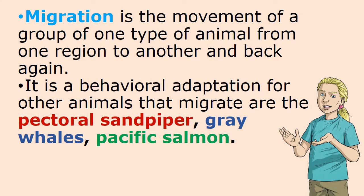Migration is the movement of a group of one type of animal from one region to another and back again. It is a behavioral adaptation. Other animals that migrate are the pectoral sandpiper, the gray whale, and the Pacific salmon.